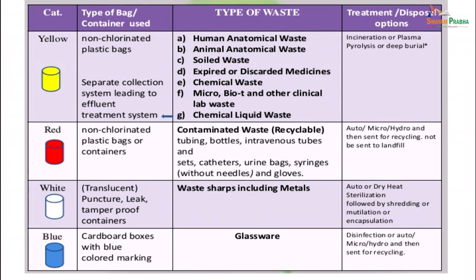White containers should be translucent, puncture-proof, leak-proof or tamper-proof, and are used to collect waste sharps including metals. They need to be autoclaved or dry heat sterilized, followed by shredding, mutilation or encapsulation so that they cannot be reused. Blue bags — usually cardboard boxes with blue colored markings — are used to collect glassware, which is then disinfected, autoclaved or microwaved and sent for recycling.